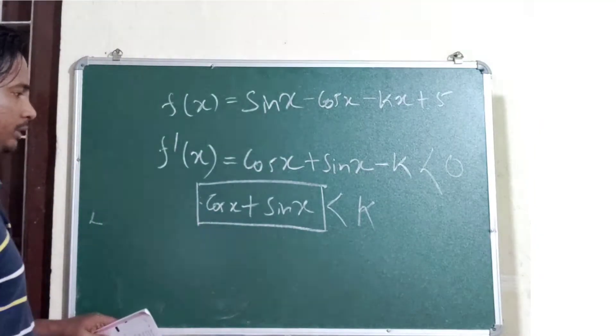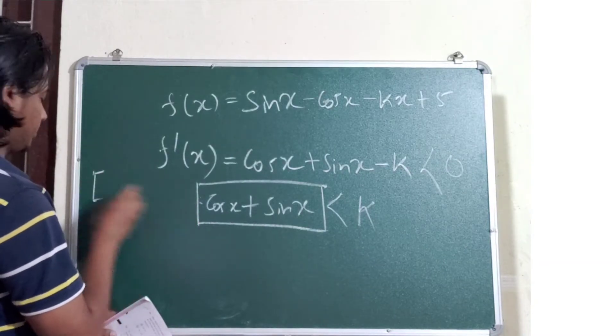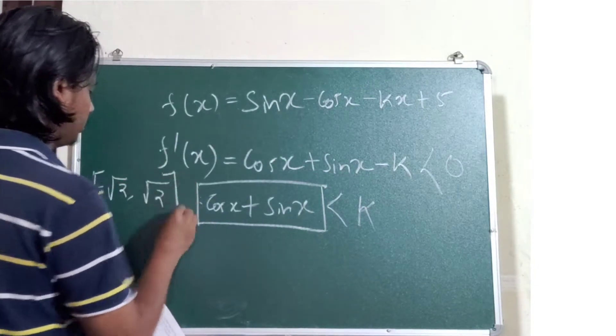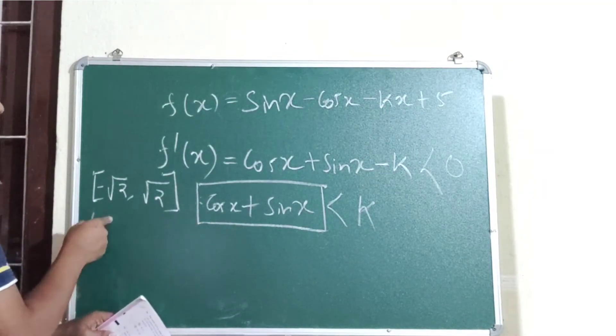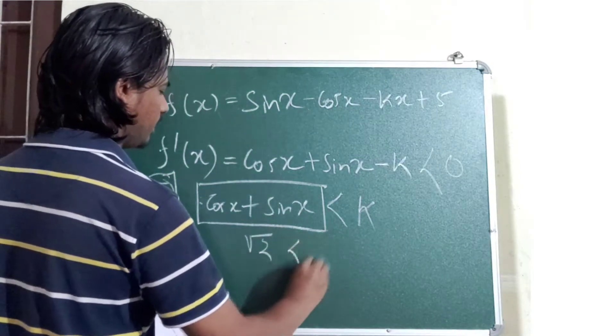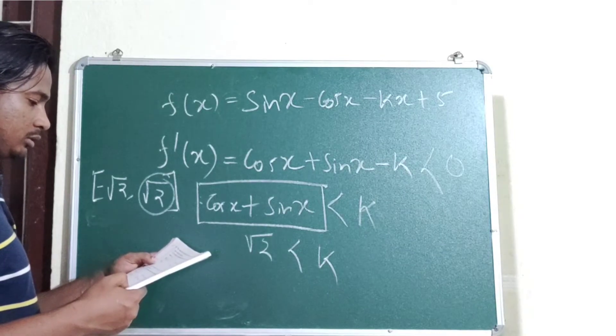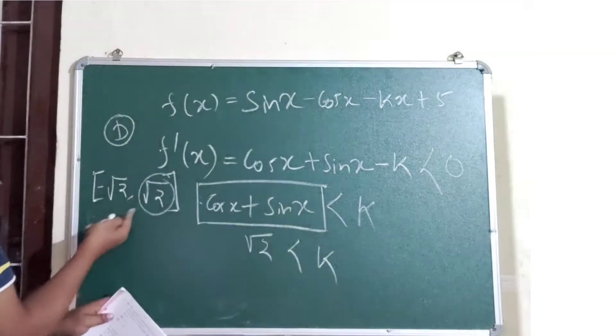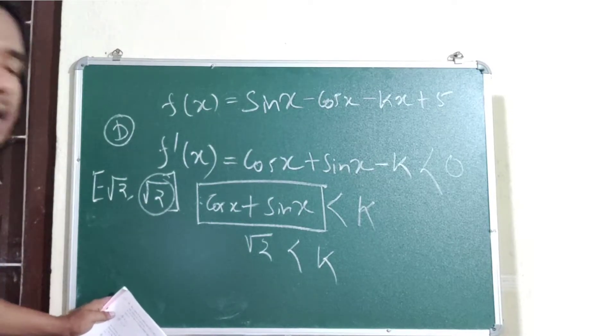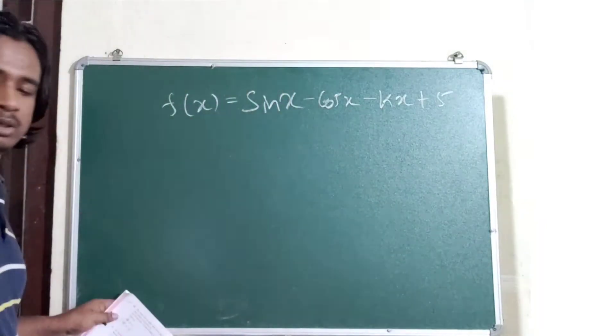What is derivative of f dash of x? This is equal to sin x derivative cos x, then cos x derivative minus sin x, and minus kx derivative k. This is equal to decreasing, so this is less than 0 for all x positive. Cos x plus sin x is less than k. So what is the maximum value of sin x plus cos x? Sin x plus cos x domain range is minus root 2 to root 2.